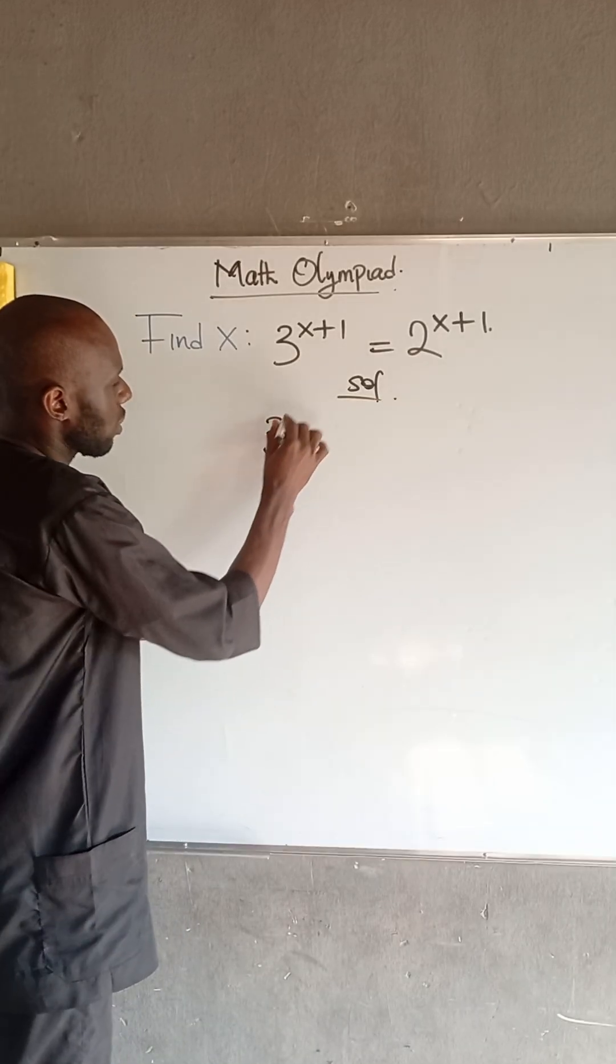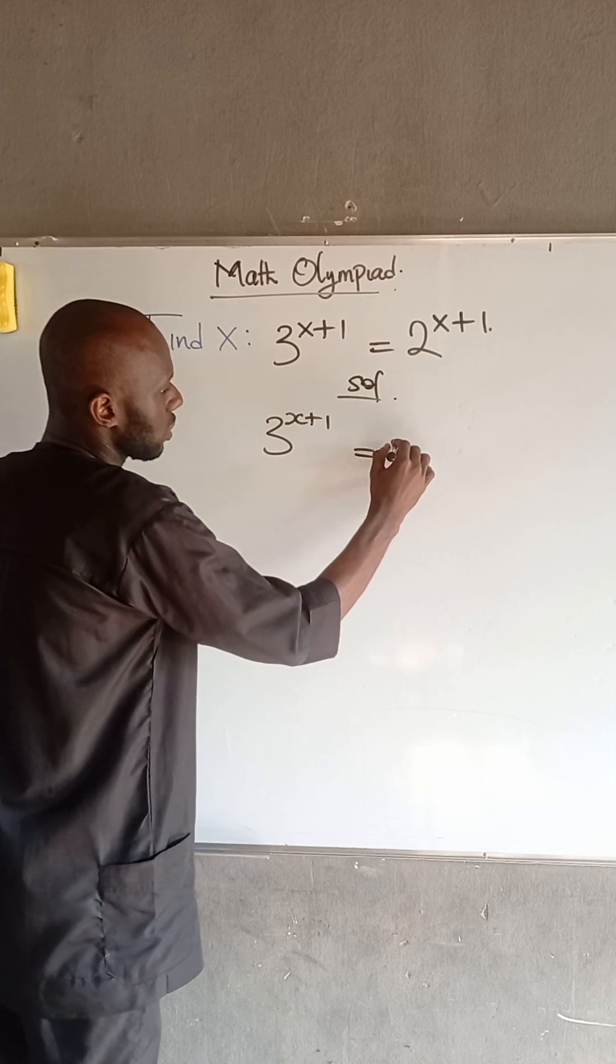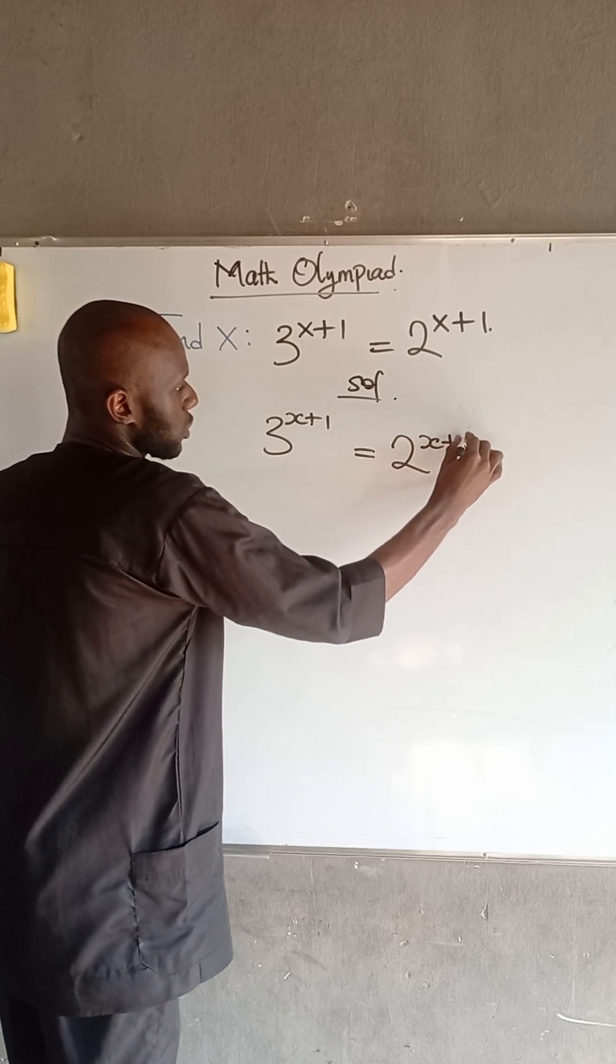We have that 3 raised to the power of x plus 1 is equal to 2 raised to the power of x plus 1.